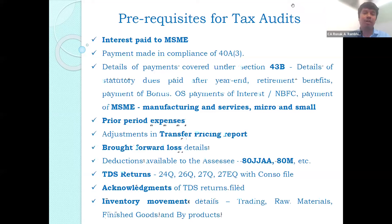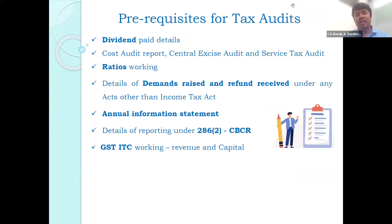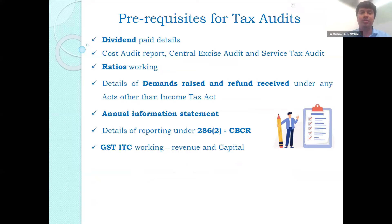Moving on to inventory movement details, the tax auditor has to report the trading, raw material, finished goods, and by-product quantity movement details during the year. In case of corporates, if dividends are declared, the details of the dividend, cost audit report, excise audit report, and service tax audit report details have to be mentioned, with any major observations reported by the auditor.